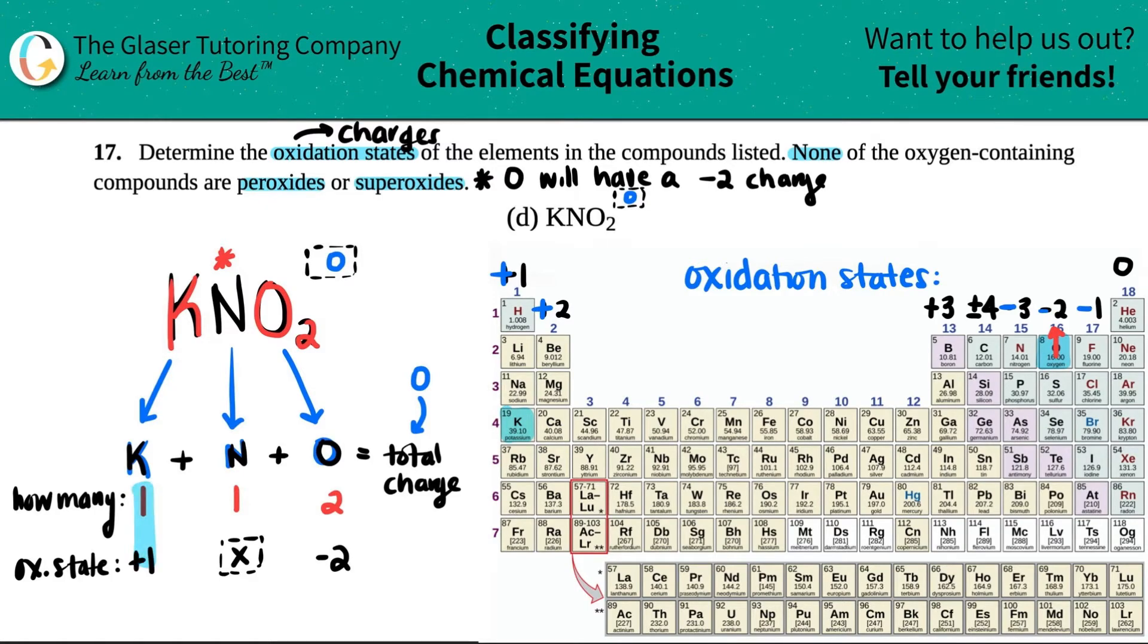Now what you're going to do is you're going to multiply what you know of each element.